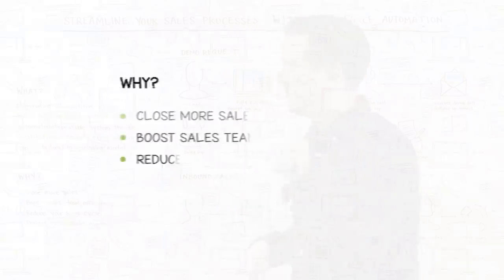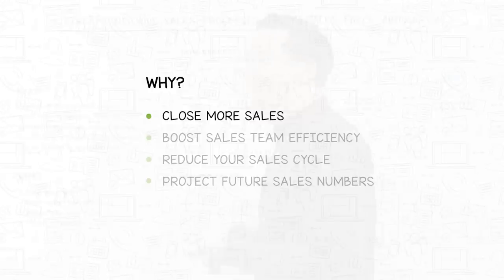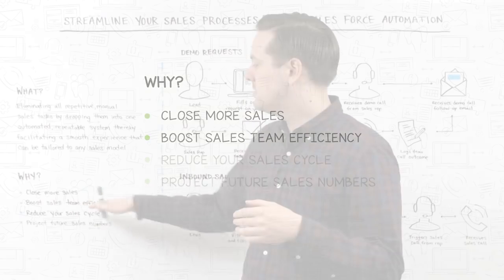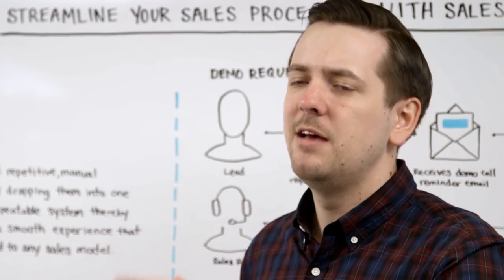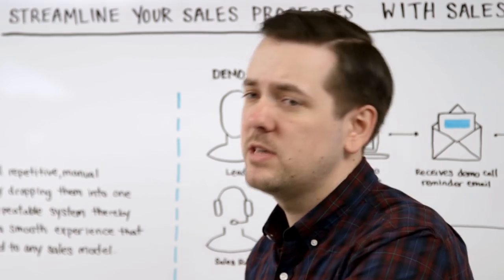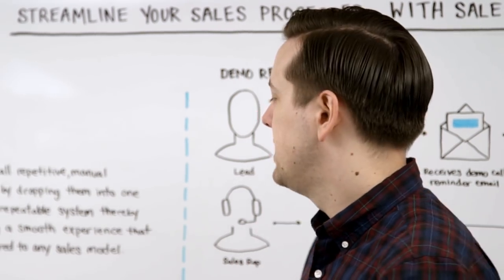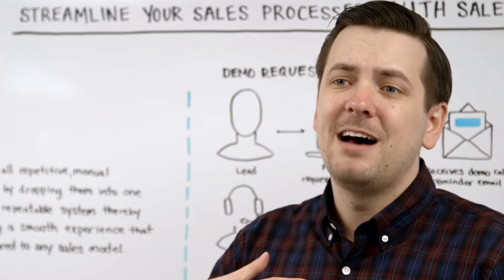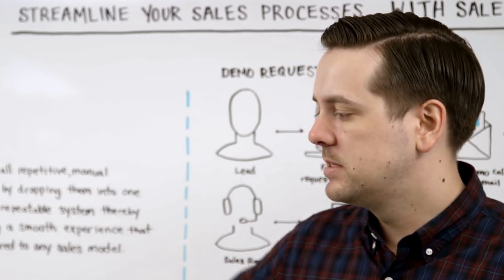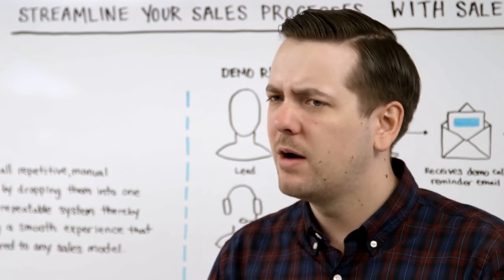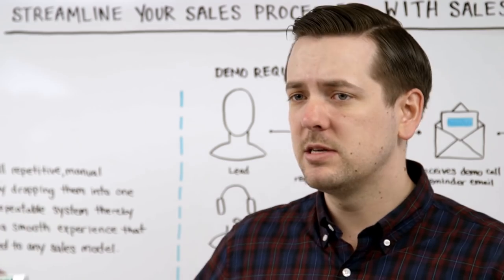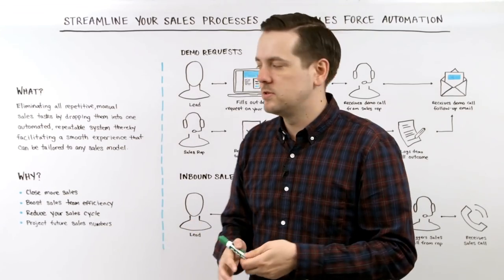So why would you want to do this? The first reason is to close more sales, and I'm going to jump into the second reason, which is to boost sales team efficiency. By increasing your sales team efficiency — and if you're a solopreneur and it's just you — this still applies, because by increasing your efficiency, you're going to be able to close more sales and have more conversations. If I have one salesperson who can only have two conversations a day and I automate the process so they can have four conversations a day, there's more opportunity for sales.